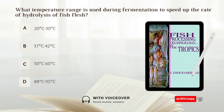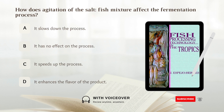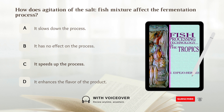What temperature range is used during fermentation to speed up the rate of hydrolysis of fish flesh? Answer: 37 to 42 degrees Celsius. How does agitation of the salt-fish mixture affect the fermentation process? A. It slows down the process. B. It has no effect on the process. C. It speeds up the process. D. It enhances the flavor of the product. Answer: C. It speeds up the process.